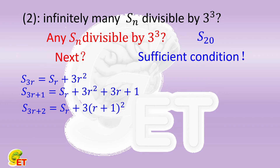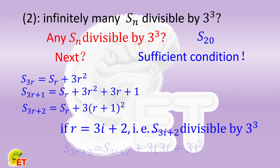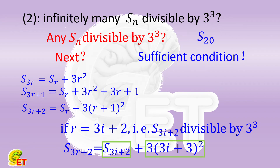What does this tell us? If r equals 3i + 2 for some natural number i — that is, if S(3^r + 2) is divisible by the cube of 3 — we can compute S(3·(3^r + 2) + 2) using the formula: it equals S(3^r + 2) plus 3 times (3^(r+1))^2... and both of these two items are divisible by the cube of 3. Therefore S(3·(3^r + 2) + 2) is also divisible by the cube of 3.